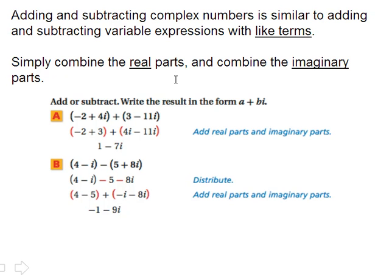A couple of things, then, when adding and subtracting complex numbers, you want to treat the i as a variable. And you would add and subtract like terms. And so we're putting the real parts together and the imaginary parts together.